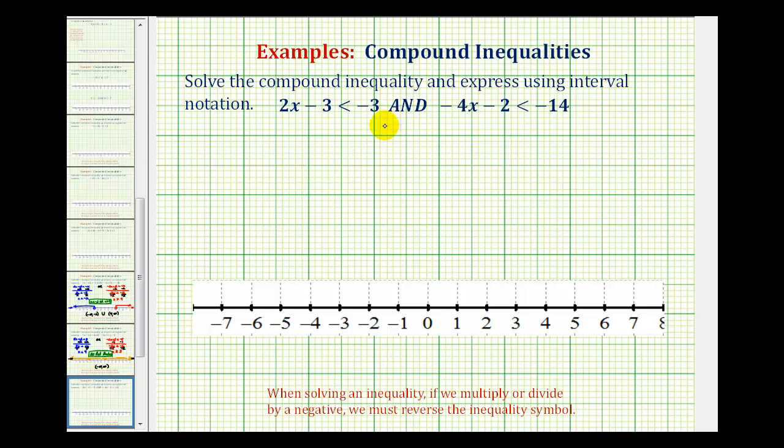We want to solve the given compound inequality and express the solution using interval notation. Notice our compound inequality consists of two inequalities connected by the word AND, which means the solution will be the values that satisfy the first inequality and also the second inequality.